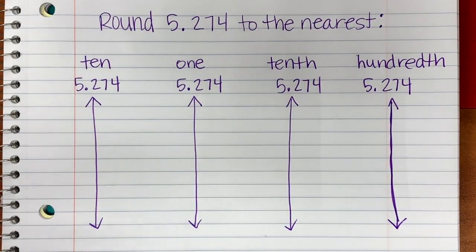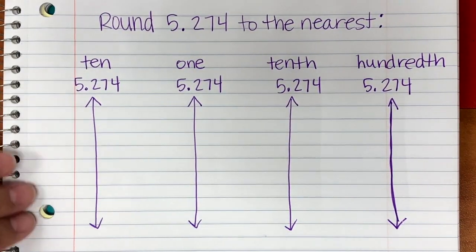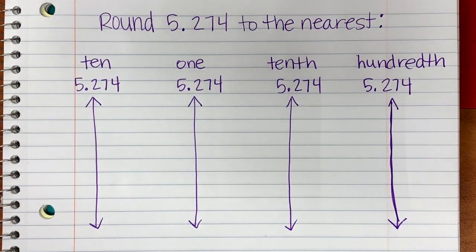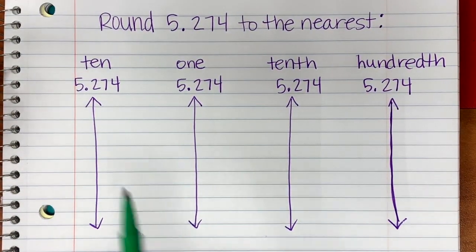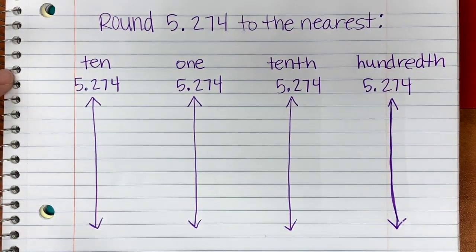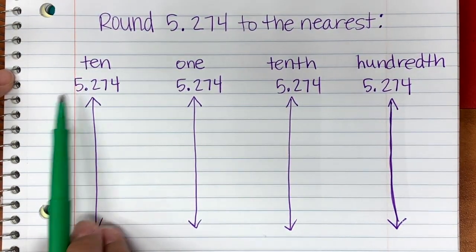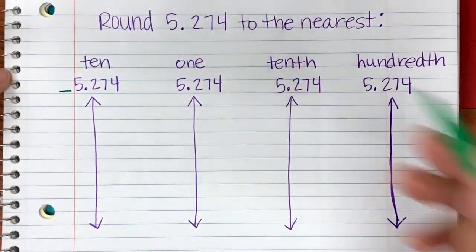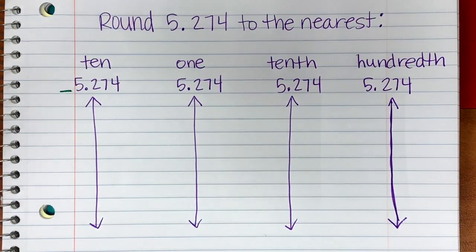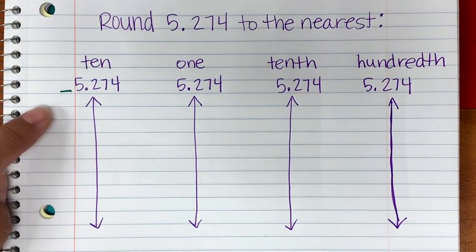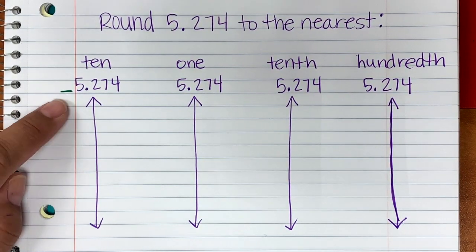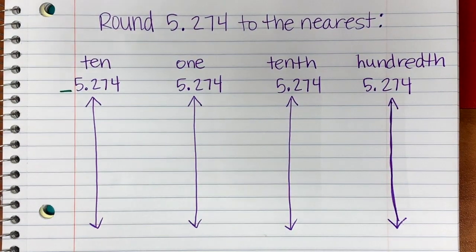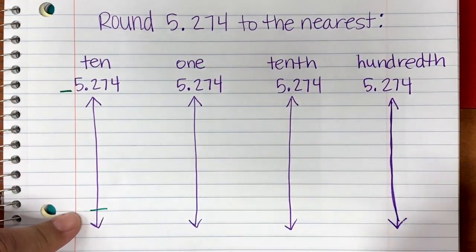The steps are the same every time you do this. The number line is vertical to help us show what is greatest in value and what is less in value. The first thing we're going to do is underline the place that we are rounding to. So if we're rounding to the nearest ten, we need to underline the tens place — even if there's no number there. Whatever you underline, that is going to be what you put as your floor on the vertical number line.